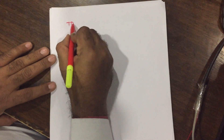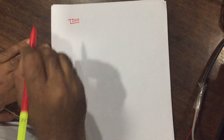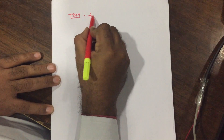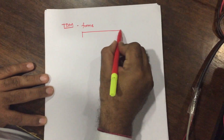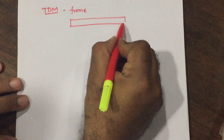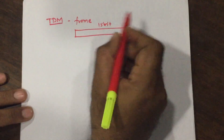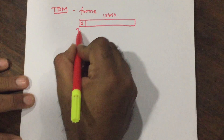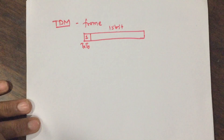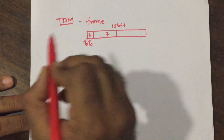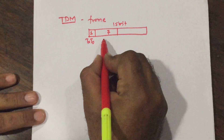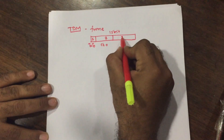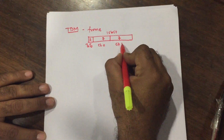The idea behind time division multiplexing of two different signals can be understood by a frame structure. A frame consists of 15 bits. Out of 15 bits, 1 bit is used for frame synchronization — that is the transmit start. 7 bits are used for the digital bits of channel 0 sample and 7 bits for channel 1 sample.